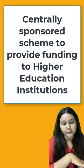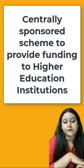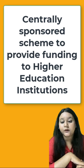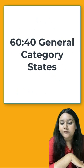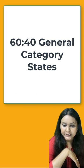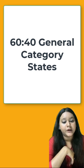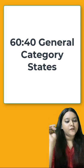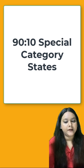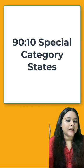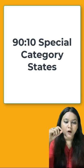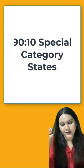RUSA is a centrally sponsored scheme which aims to provide strategic funding to higher education institutions throughout the country. The central funding follows a ratio of 60 to 40 for general category states, and 90 to 10 for special category states, based on institute norms and policies.